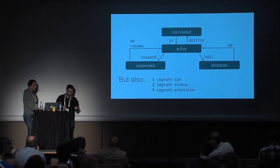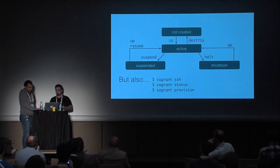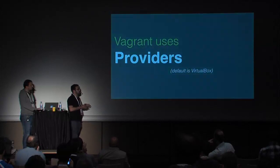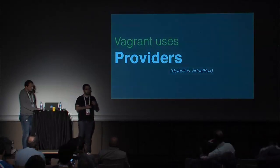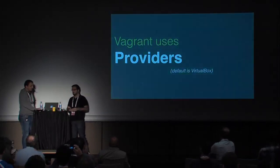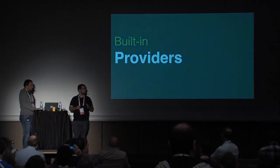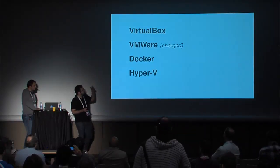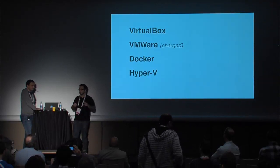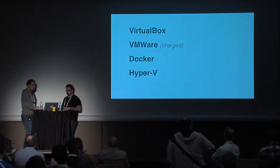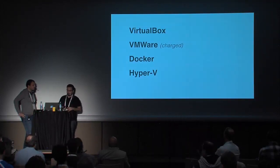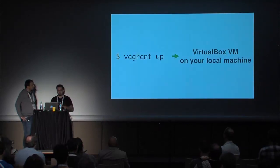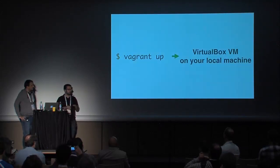Vagrant manages your instances and uses providers in the background to create and destroy virtual machines. The default one is VirtualBox, but there are four built-in providers: VirtualBox, VMware, Docker, and Hyper-V. When you run 'vagrant up,' a VirtualBox VM is created on your local machine.